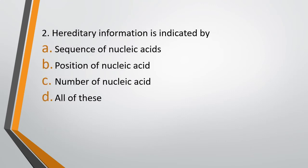Question 2. Hereditary information is indicated by: Option A, Sequence of Nucleic Acids; Option B, Position of Nucleic Acid; Option C, Number of Nucleic Acids; Option D, All of these. The correct answer is Option A — the sequence of the Nucleic Acids determines the hereditary information.